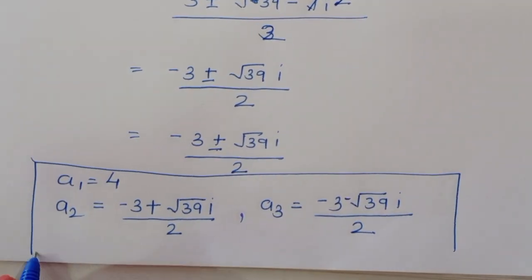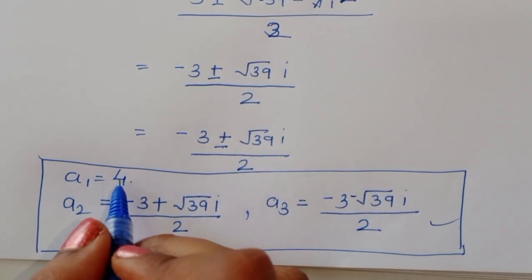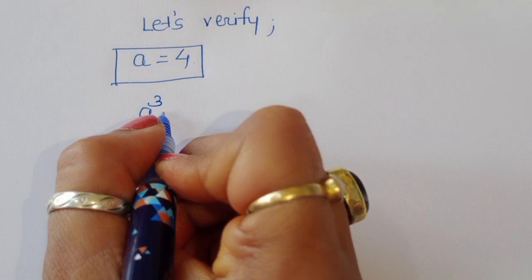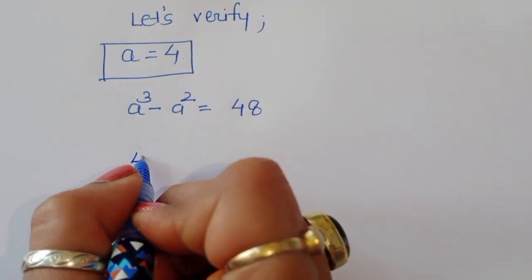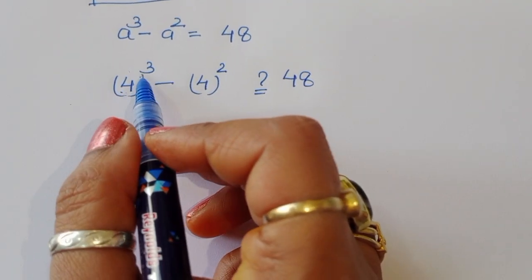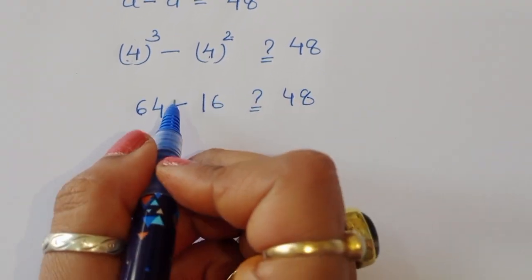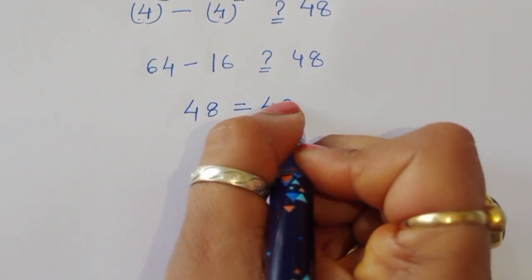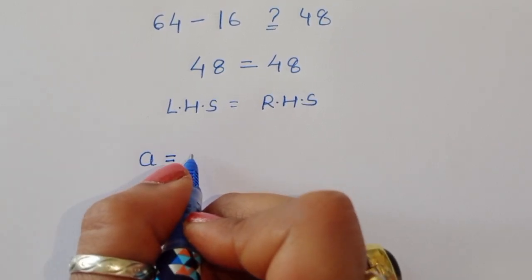Let's verify a₁ = 4, which is the real solution (a₂ and a₃ are imaginary). Substituting into a³ - a² = 48: 4³ - 4² = 64 - 16 = 48. Since LHS = RHS = 48, the value a = 4 is correct.